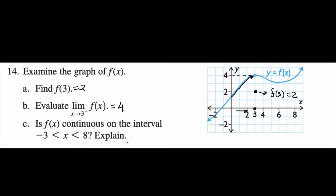The limit as x approaches 3 from the left equals 4. Then, is f(x) continuous on the interval from −3 to 8? Imagine running along the line from −3 — you keep going and then there is an interruption. That means the function is not continuous on this interval because there is a break in the graph.